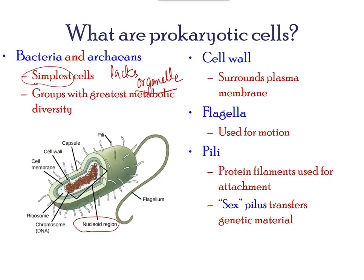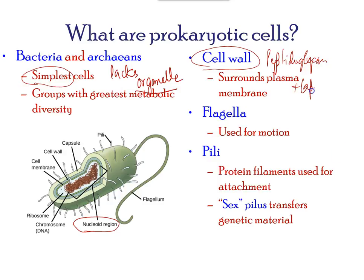Like archaea and eukaryotes, bacteria have a cell wall made up of peptidoglycan, which is comprised of sugars and amino acids, and many have an additional polysaccharide capsule. The cell wall acts as an extra layer of protection, helps the cell maintain its shape, and prevents dehydration. The capsule enables the cell to attach to surfaces in its environment.